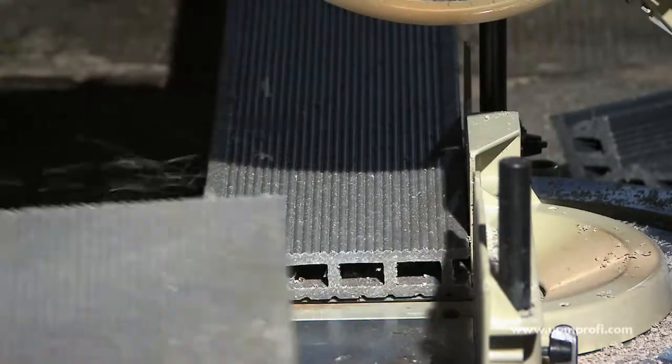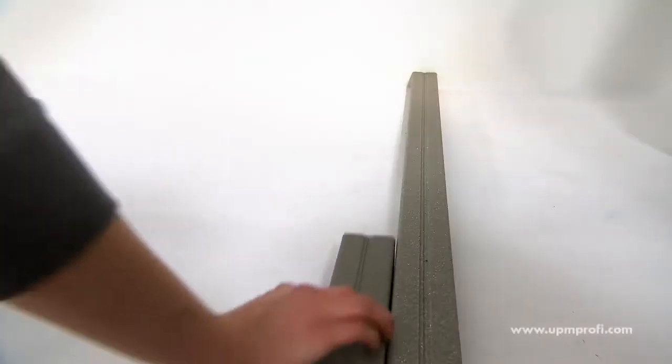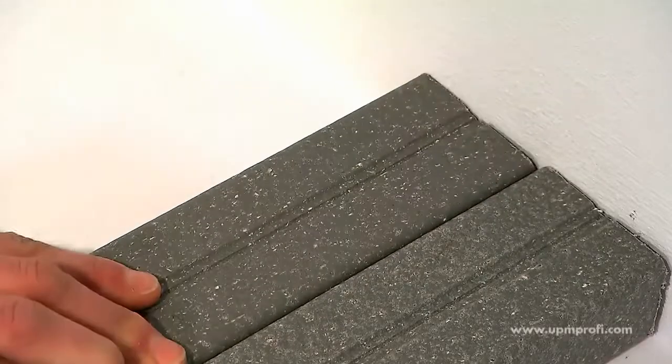When using UPM Profi support rails they must be laid onto a hard flat surface that allows surface water to drain away.